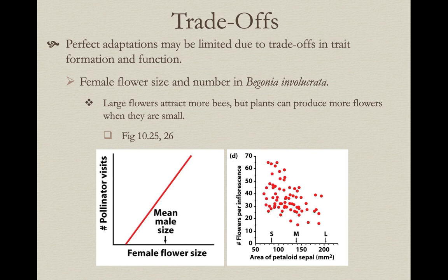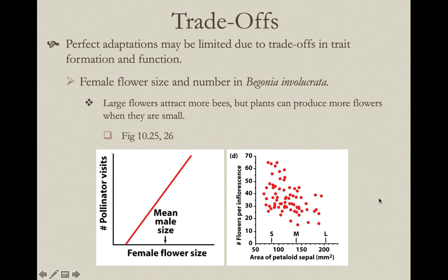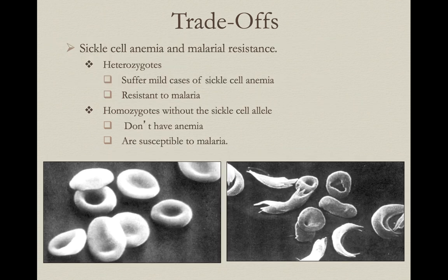Sometimes a trait has trade-offs, so the perfect adaptation is limited because certain aspects work well in one condition but not another. In begonias, from the female flower's perspective, bigger flowers attract more pollinator visits — directional selection for large flowers. But across the plant, the number of flowers that can be produced is inversely related to flower size — directional selection in the opposite direction. There will be some intermediate flower size that balances these opposing selective pressures on female flower size.